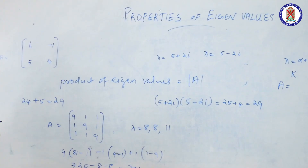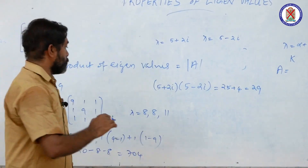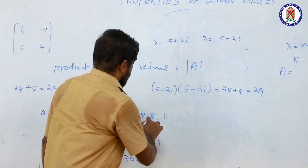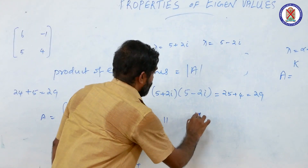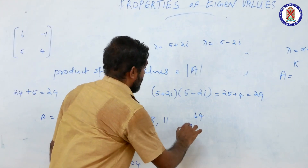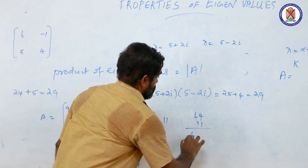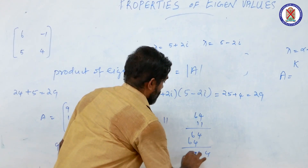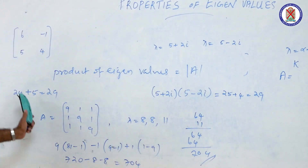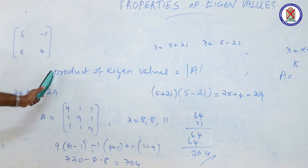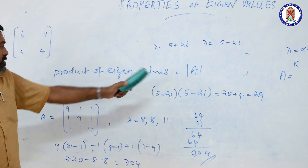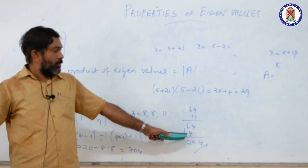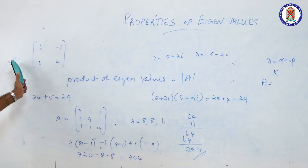The product of the eigenvalues is 8 × 8 × 11 = 64 × 11 = 704. This matches the determinant, confirming that in all cases, the product of the eigenvalues equals the determinant of the matrix.